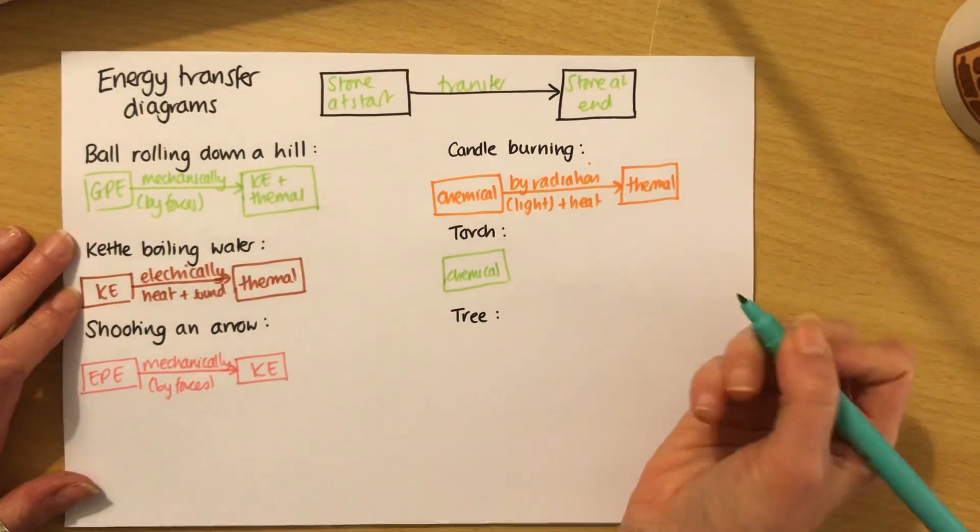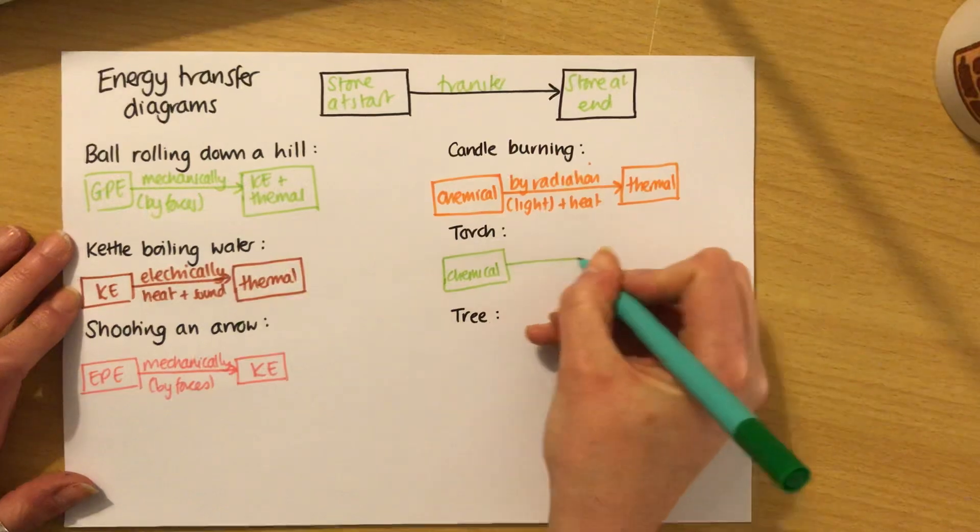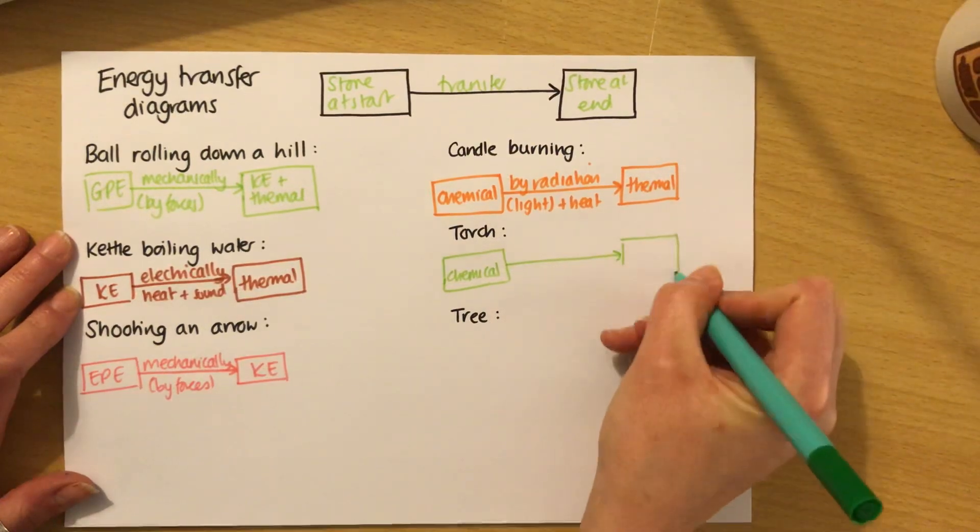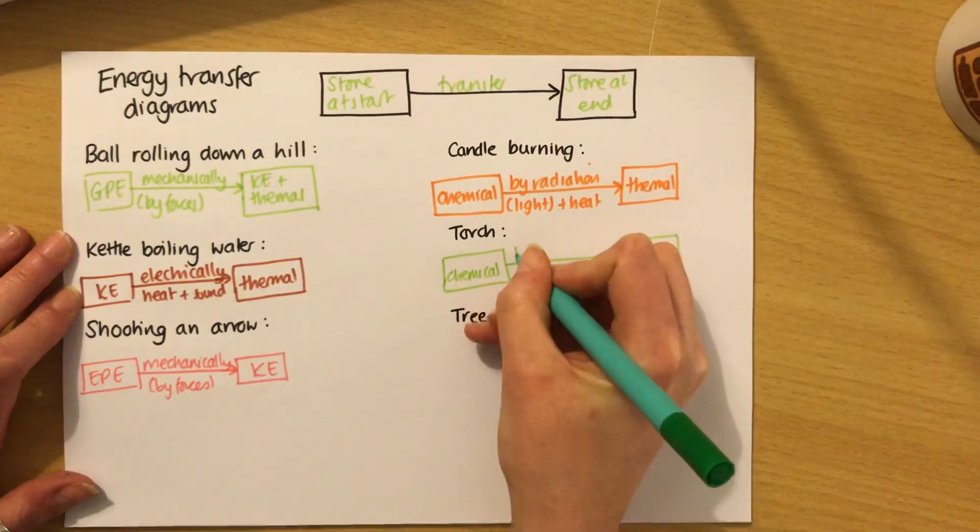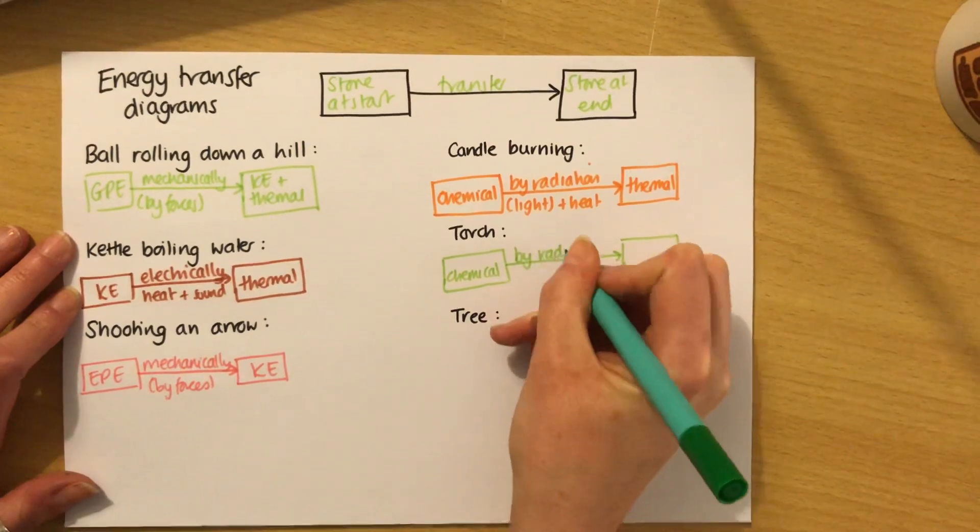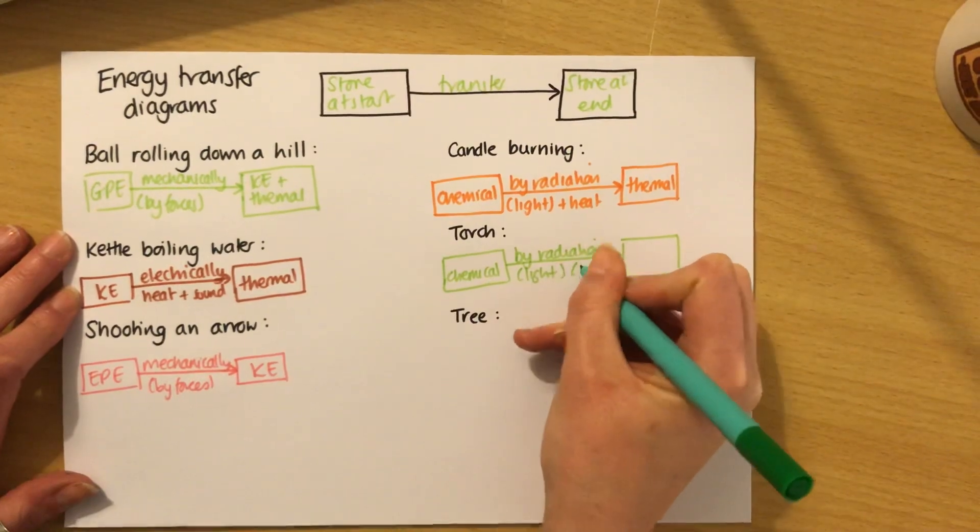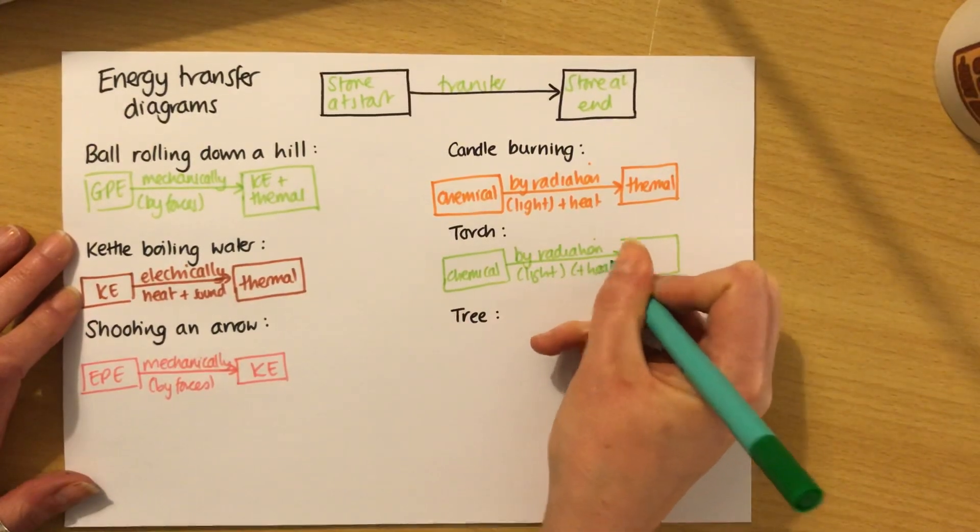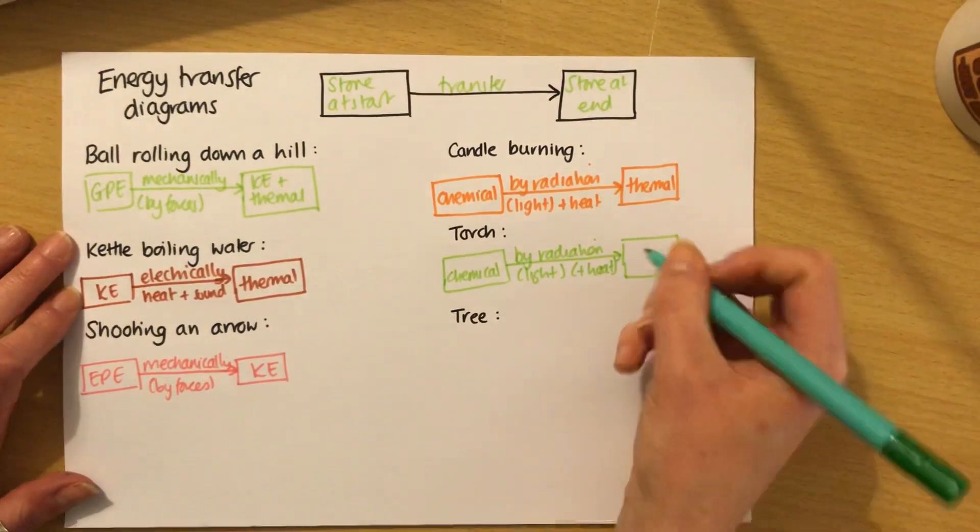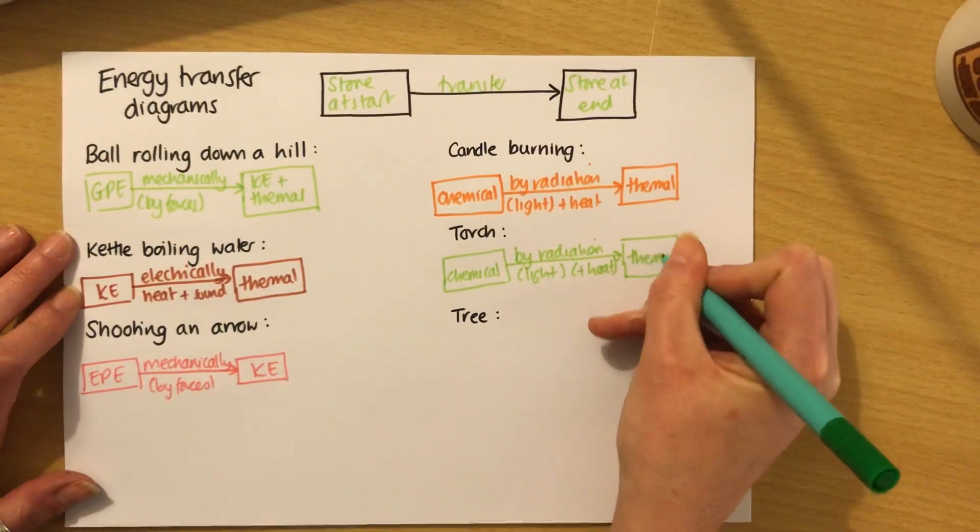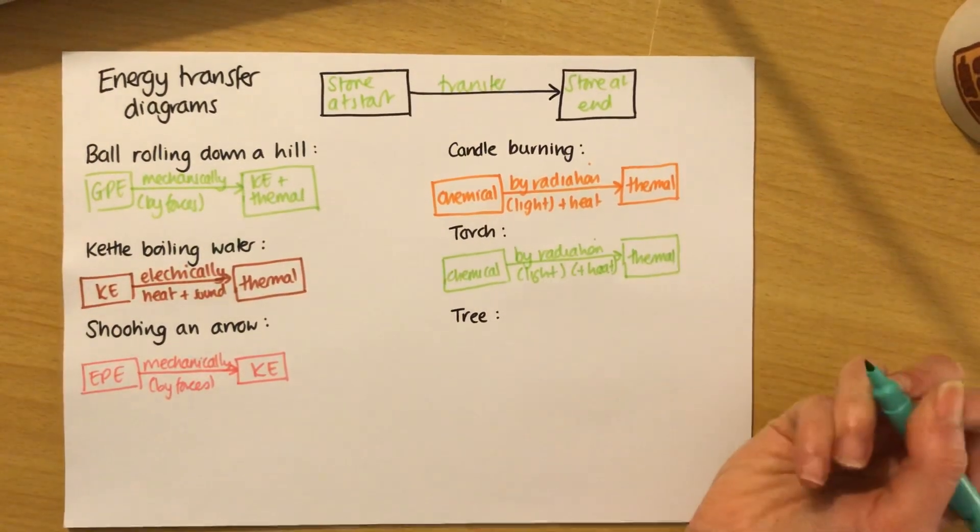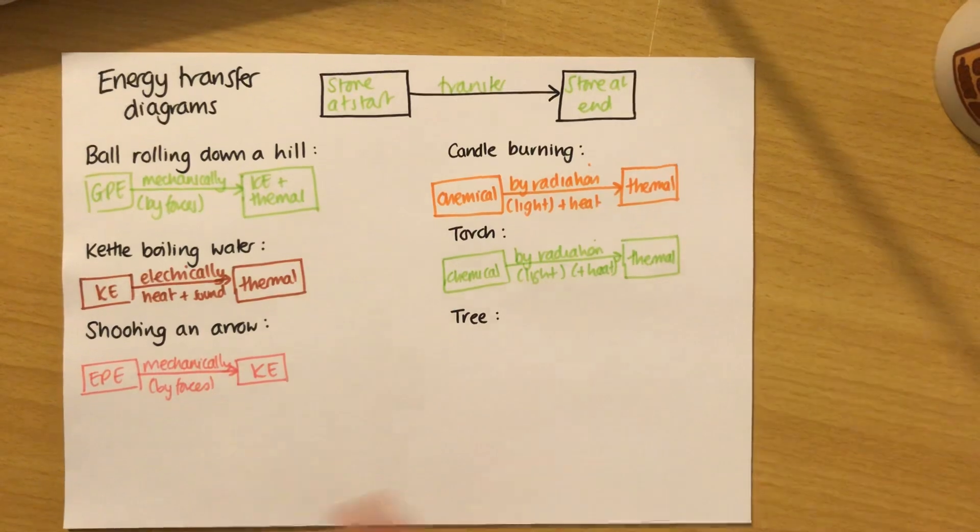And for a torch, once again, it's light, just like a candle really. So I'm going to have exactly the same second part as the candle. So I'm going to have by radiation or light, and actually a bit of heat. Torches don't get as hot as candles, but they get a little bit warm. And it's going to turn into the thermal energy of the surroundings. Once that light hit the wall or hit the surroundings, it will heat the surroundings up slightly.